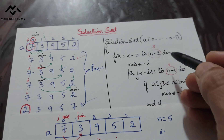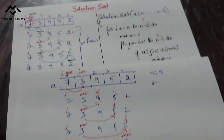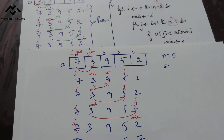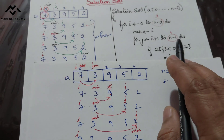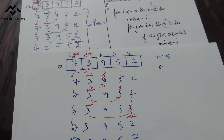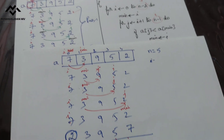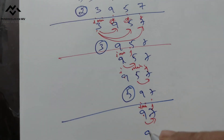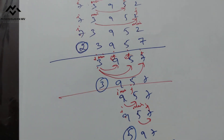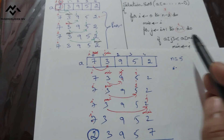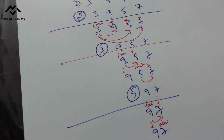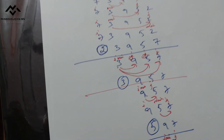i increments to 3. 3 is less than or equal to 3, true. This is min. j equals 4; 4 is less than or equal to 4, true. a[j] is less than a[min], so we make this the min position. j increments to 5; condition false, exit loop. Swap: 7 is placed. We got the sorted array — sorting complete.